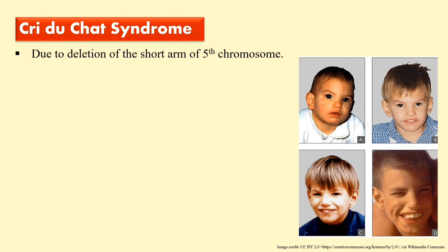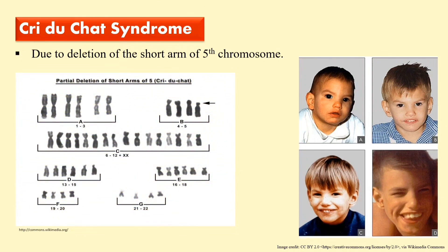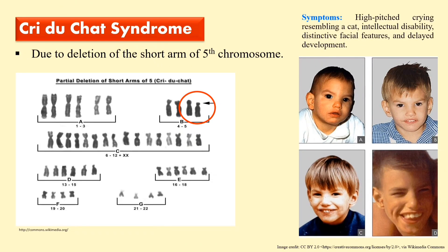Next is Cri-du-Chat syndrome. This syndrome is due to the deletion of the short arm of the fifth chromosome. In the karyotype shown, you can see a deletion indicated by an arrow on the short arm of chromosome 5. One of the main symptoms is that the patient cries like a cat, which is how this syndrome gets its name. Other symptoms include distinctive facial features and delayed body development. Pictures of affected patients are also shown.